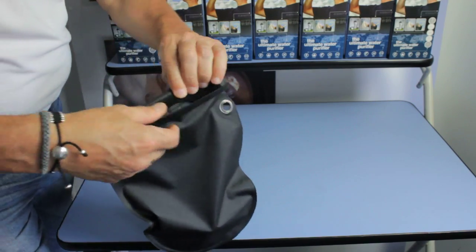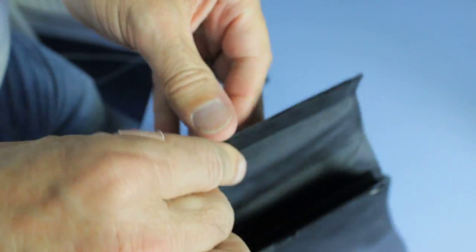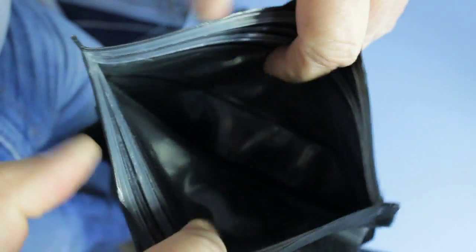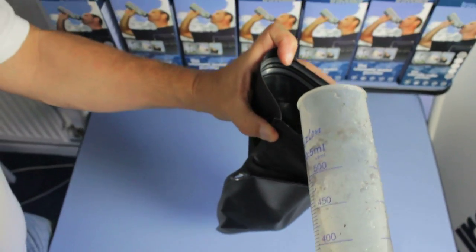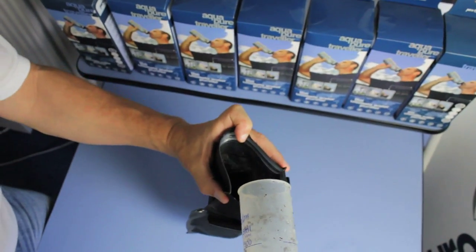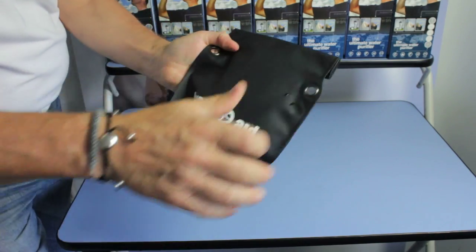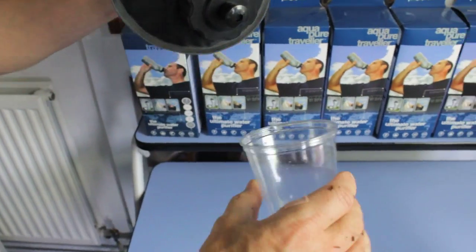Simply open the velcro seal. Inside there you've got industrial strength seals as well. Put the water into the bag, make the seal and then you're good to go. Pull the pop top and produce water for yourself or your family.